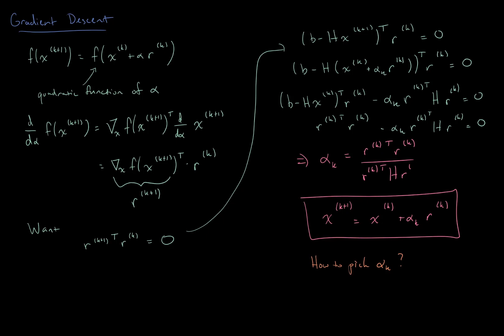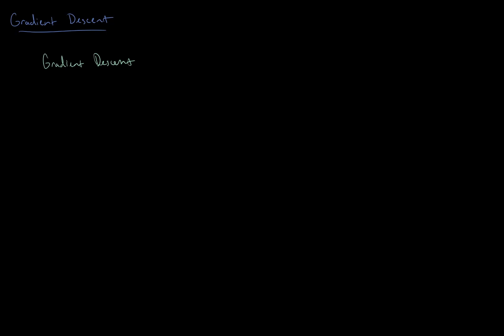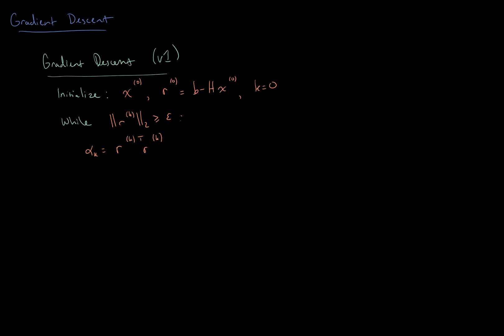Putting all this together, we have the following simple gradient-descent-based algorithm for solving a least squares problem. First, initialize with some x naught, set r naught equal to b minus H times x naught, and set the iteration counter k to zero. Then we have a while loop that checks for convergence: while the L2 norm of the residual is greater than epsilon, we iteratively calculate the optimal step size alpha k, take a gradient step in the direction of rk, update the residual with our new xk, and update our iteration counter. In the notes, there's a clever improvement that reduces the two matrix multiplications to just a single matrix-vector multiplication, which can make a big difference when solving large problems.